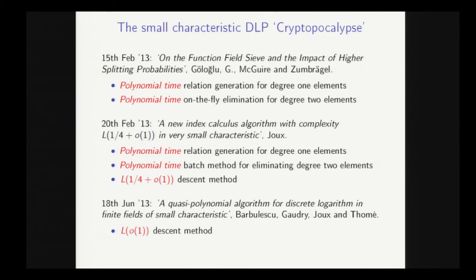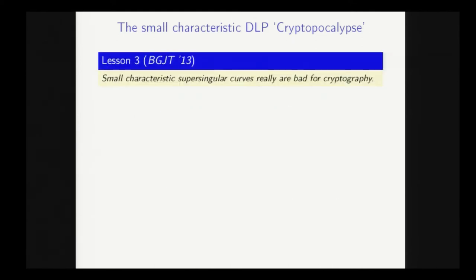And then a couple of months after that, we have the quasi-polynomial algorithm due to Barbulescu, Gaudry, Joux, and Thomé. And here, the descent they showed is quasi-polynomial, an even bigger breakthrough. And as a result of this, the third lesson for the use of supersingular curves in crypto is that small characteristic supersingular curves really are bad for cryptography.